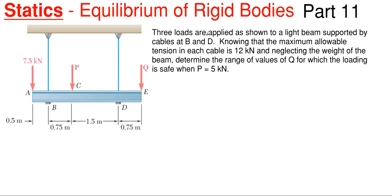So what we got here is that we have three loads are applied as shown to a light beam supported by cables B and D. Knowing that the maximum allowable tension in each cable is 12 kilonewtons and neglecting the weight of the beam, determine the range of values for Q, for which the loading is safe when P is equal to 5 kilonewtons.